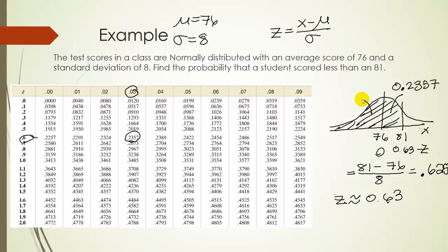And we know the area to the left of 0 is going to be .5. So if we add those together, that will give us the probability someone scores less than an 81. So the probability that x is less than 81 would be .2357 plus .5, which would be .7357. And that's our answer.